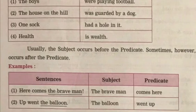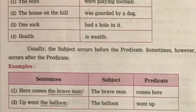Now let's do some exercises. Exercise number one: underline the subject in the following sentences. 'Good listeners look at the speaker.' The verb is 'look'. Who look at the speaker? Good listeners. So 'good listeners' is your subject and 'look at the speaker' is your predicate.